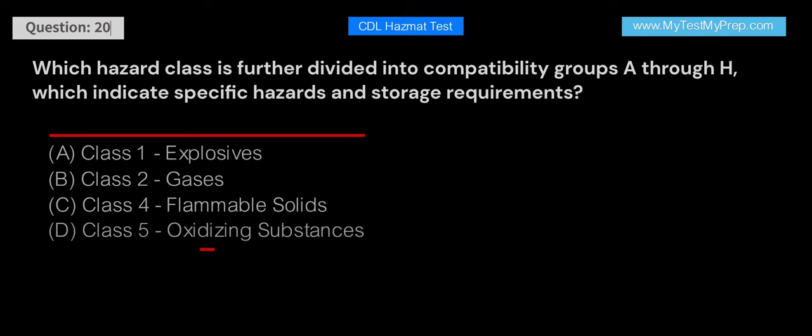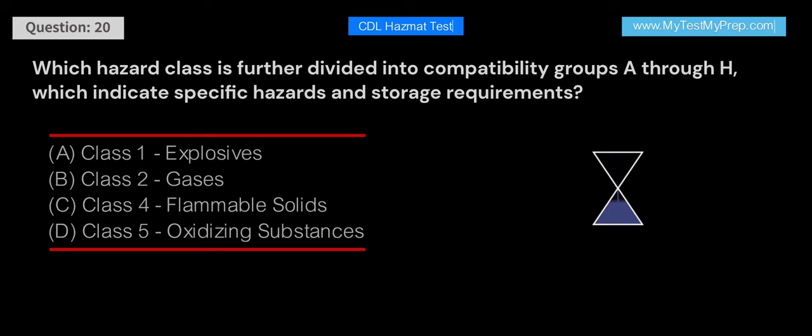Which hazard class is further divided into compatibility groups A through H, which indicate specific hazards and storage requirements? A. Class 1 Explosives. B. Class 2 Gases. C. Class 4 Flammable Solids. D. Class 5 Oxidizing Substances. Answer: A. Class 1 Explosives is further divided into compatibility groups A through H. These groups indicate specific hazards and storage requirements for each type of explosive material, helping to ensure their safe transportation and handling.